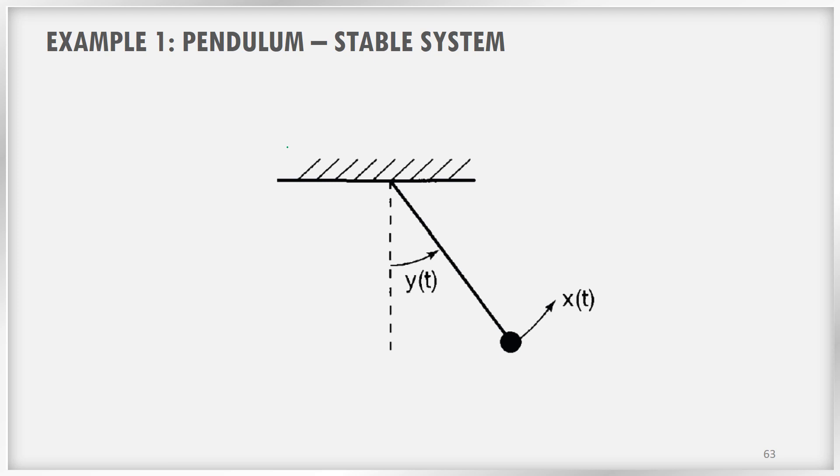Consider an example of a pendulum. Here, we are applying a force at the knob of this pendulum, and let us call that as the input signal x of t. And based on the applied force, you can see that there is an angular deviation from the vertical position, and that angular deviation is the output signal. So I am giving an input signal, I am pulling it. For that pull, what is the angular deviation? That is my output signal.